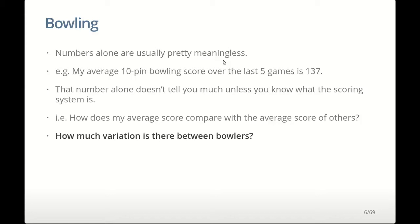For example, with COVID, we know in New Zealand there have been 1,400 confirmed cases to date. By itself, that doesn't give us much information. But if we compare that to other countries in the world, we can see that New Zealand is doing extremely well — on a per population basis, we're one of the lowest number of cases in the world. That's the sort of thing that statistics allows us to do.